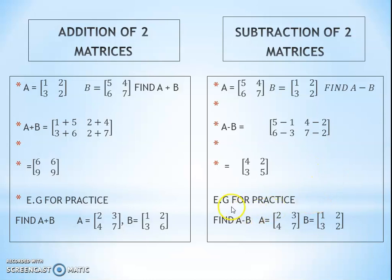Example for practice: find A minus B where A equals [2, 3; 4, 7] and B equals [1, 2; 3, 2]. Be careful in subtraction — the second matrix has all its numbers signed. Positive goes negative, negative goes positive. Be careful about these terms.